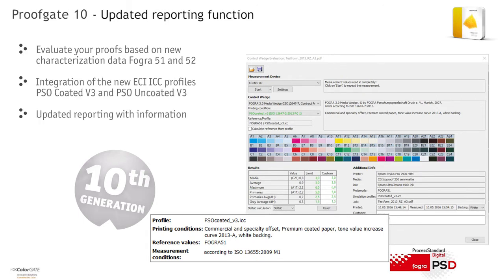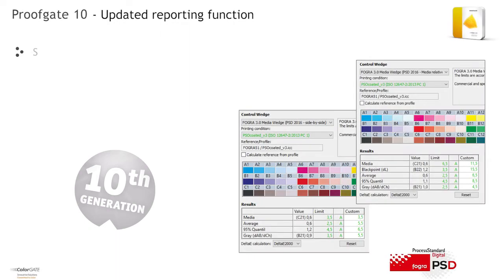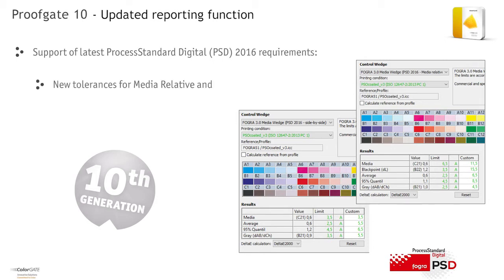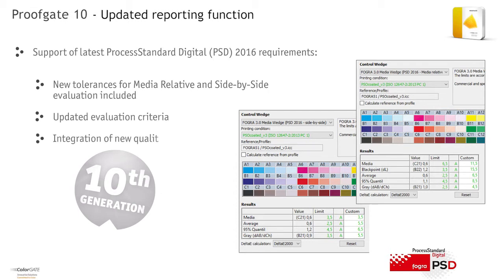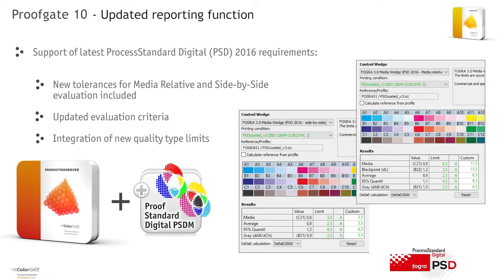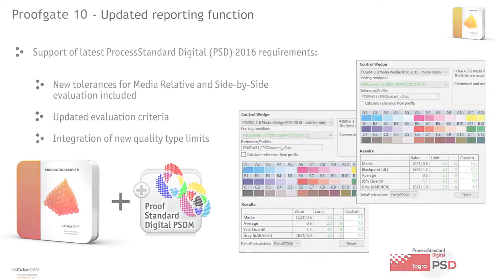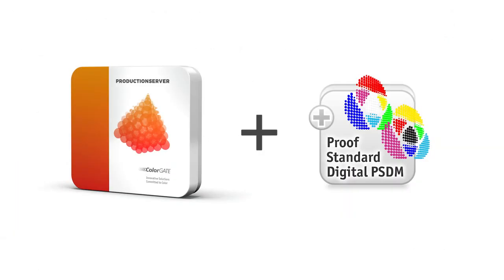ProofGate version 10 offers the possibility to evaluate proofs according to FOGRA 39 and to the latest characterization data FOGRA 51 and 52. Therefore, the new ECI ICC profiles PSO Coated V3 and PSO Uncoated V3 are available. Furthermore, with version 10, ProofGate supports the current Process Standard Digital PSD requirements for 2016, including new tolerances for media relative and side-by-side evaluation, providing updated evaluation criteria and the use of new quality type limits. These improvements are available for ProofGate 10 and Production Server 10 with the Proof Standard Digital Module, PSDM.